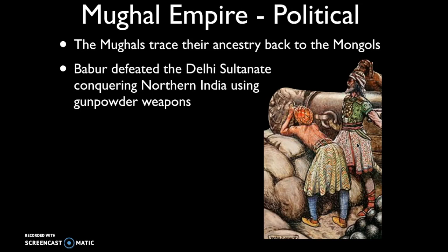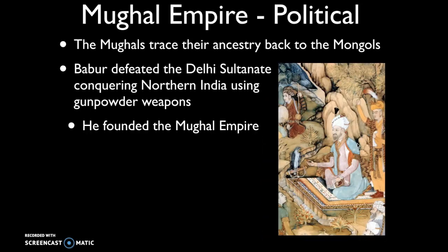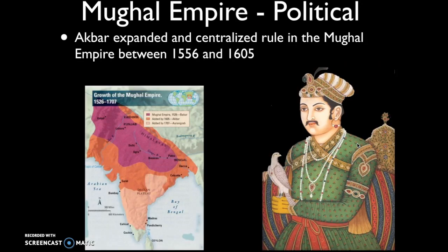The use of gunpowder weapons is a major similarity across all the empires of the Islamic world in Period 4 — the Ottomans, Safavids, and Mughals all had access to gunpowder weapons allowing them to expand. However, this wasn't unique to the Islamic world; other empires like the Spanish, Portuguese, and Russians also used gunpowder weapons in Period 4.